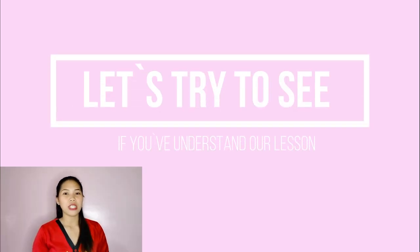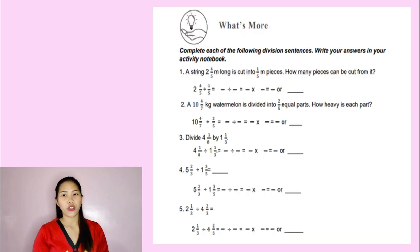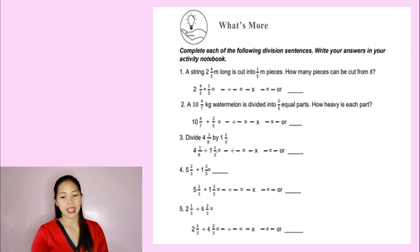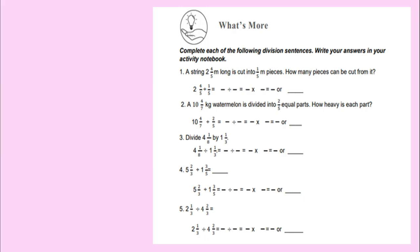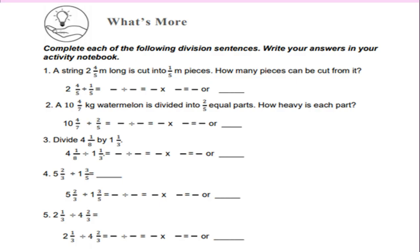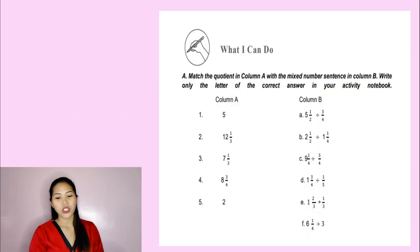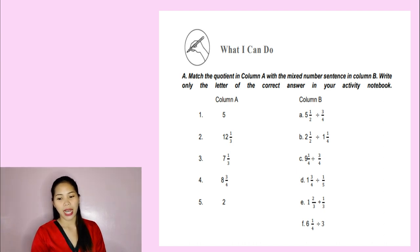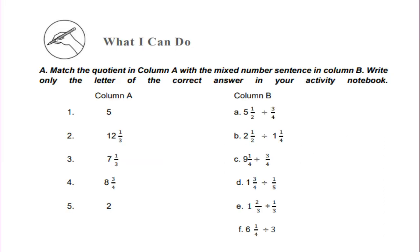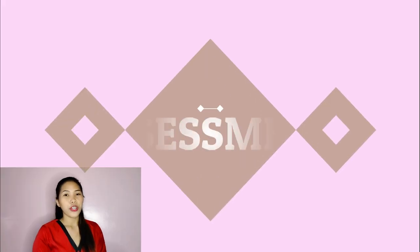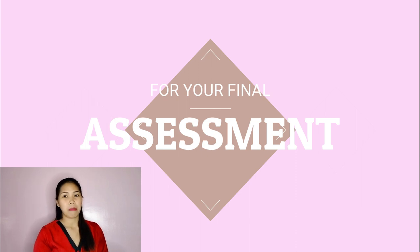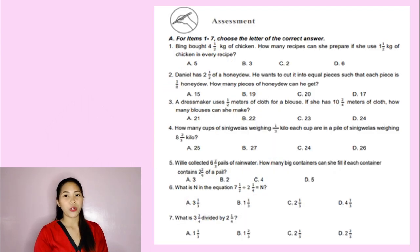Now let's try to see if you understand our lesson. Try to answer the activities I'm going to flash on your screen. Complete each of the following division sentences and write your answers in your activity notebook. To measure what you can do, match the quotient in column A with the mixed number sentence in column B. Write only the letter of the correct answer in your activity notebook. For your final assessment, answer the activity displayed on your screen and choose the letter of the correct answer.